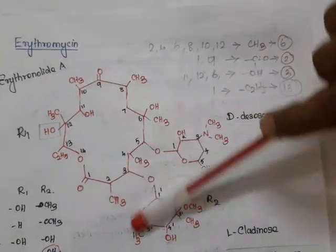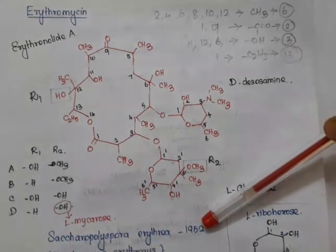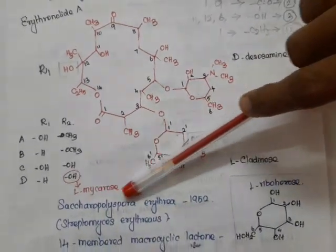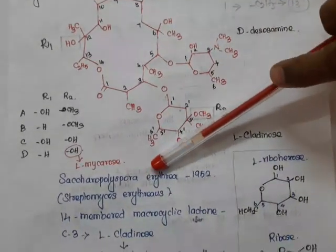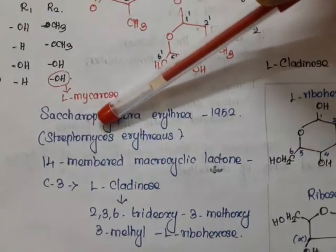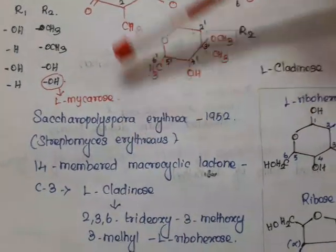Now we will see the source of erythromycin. In 1952 it was identified from Saccharopolyspora erythria, which was formerly called Streptomyces erythrius.